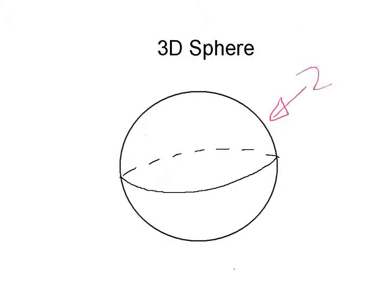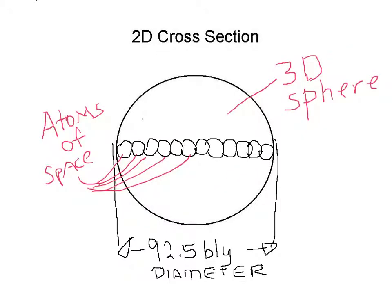A 3D sphere has a two-dimensional surface area. Let's take a cross-section and look inside. This drawing is certainly not to scale, as the number of atoms of space lying along a diameter would be almost unthinkably large, their size being very small, and the observable universe being very large, with a radius of over 92 billion light-years.